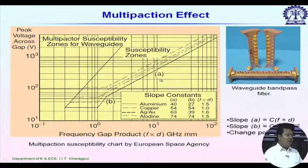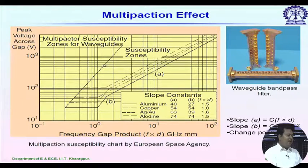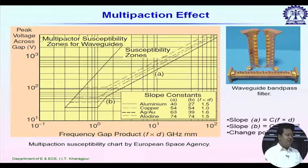The right side part of this curve is the safe region where multipaction will not occur. On the left side there is one more line, and in between the left and right lines this zone is susceptible to multipaction — most probably multipaction will happen. To the left of that line, multipaction will definitely occur. So we have to avoid these two regions.